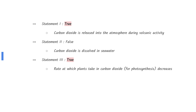Statement one is true — carbon dioxide is released into the atmosphere during volcanic activity. Statement two is false — carbon dioxide is dissolved in seawater, and increasing the solubility decreases the rate of global warming. And lastly, statement three is true — the rate at which plants take in carbon dioxide for photosynthesis decreases as the trees are cut down.